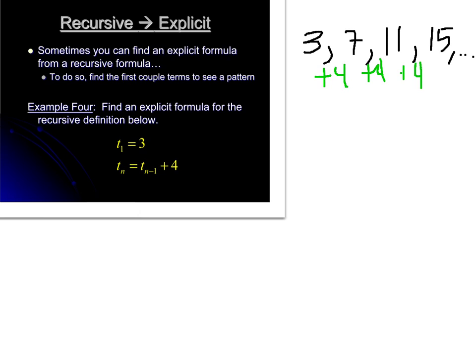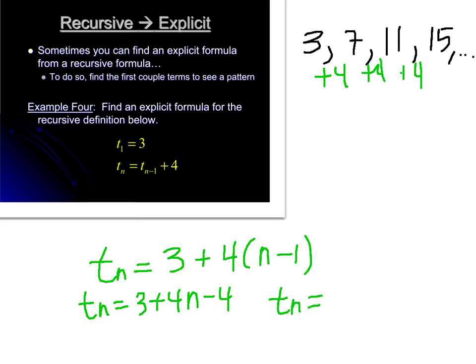So to write our formula, remember explicit formulas are only one line. We would have t sub n equals, remember your formula, you'd go 3 plus, we're adding 4 each time, and we want to multiply that to n minus 1. If we simplify that, we'd have t sub n equals 3 plus 4n minus 4. Or your final answer would be t sub n equals 4n minus 1.